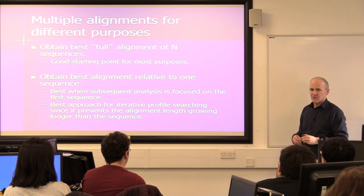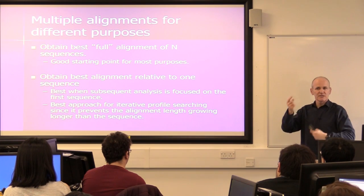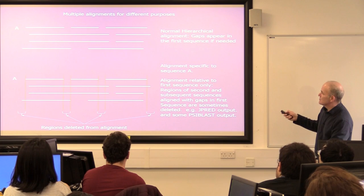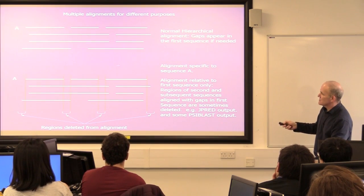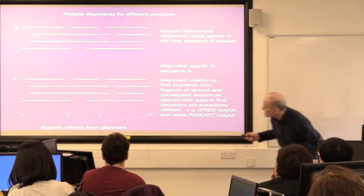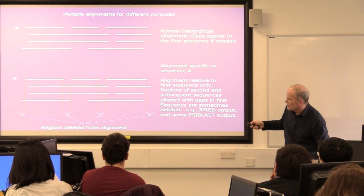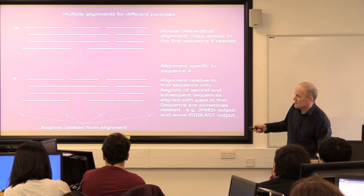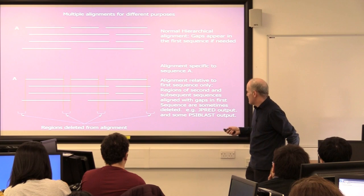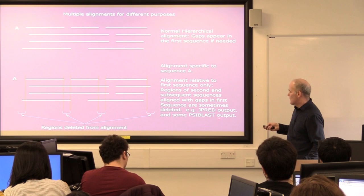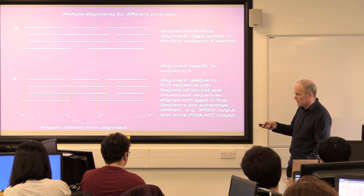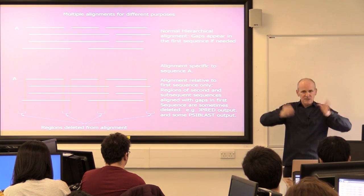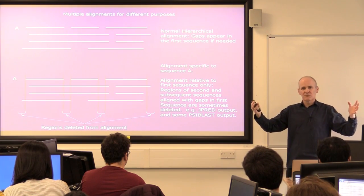If you're interested in using PSI-BLAST, I recommend the NCBI website — it has a very nice interface and you can control this process well. To illustrate what that means: a normal hierarchical alignment will have gaps appearing in the first sequence. If you've got an alignment specific to sequence A, essentially those regions won't be reported in the final alignment — you'll see sequence A without any gaps, and positions from other sequences underneath the query. This happens in some of the JPRED outputs, which you'll look at next week. It makes it more compact, and if you're interested in conservation columns relative to that sequence, it's the best way to show it.